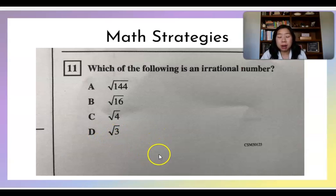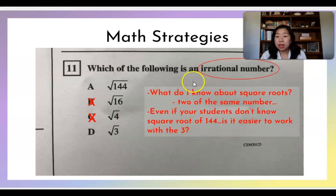I can go back to the irrational number question from before. I might not know what irrational means, but what do I know about square roots? I think I know that there are two numbers, two of the same numbers. Even if you don't know how square roots like work, is it easier to just work with the three? And I think of any number that I can multiply together that are the same, that I could get three. One times one doesn't work. Two times two is four. Three times three is nine. I'm not hearing a three in there. So I'm going to assume I can get rid of 144. And my answer is probably three.